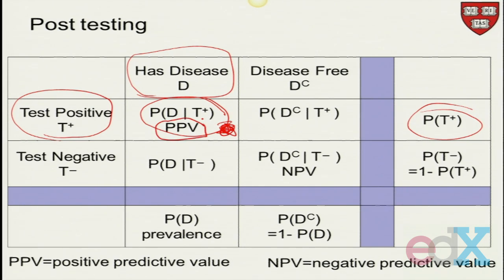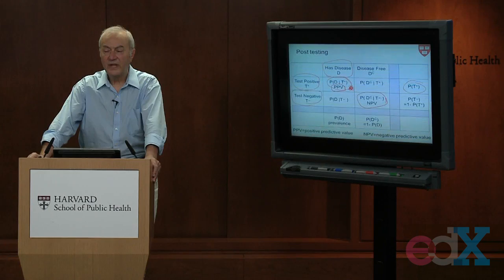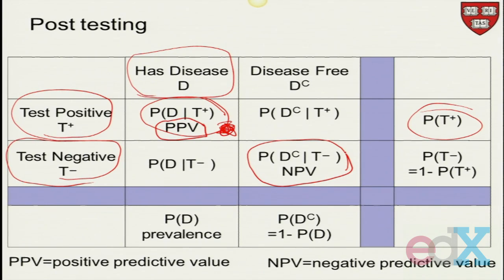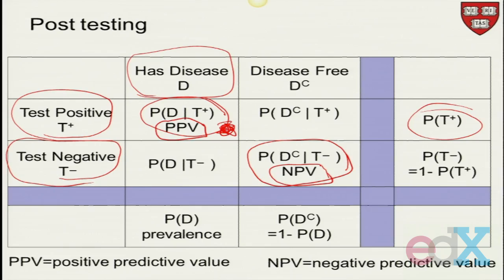What about those who test negative? What's the probability of not having the disease, given that you've tested negative? That's the negative predictive value. And as always, the stuff that's on the main diagonal is the important stuff. And so we've even given it a name.